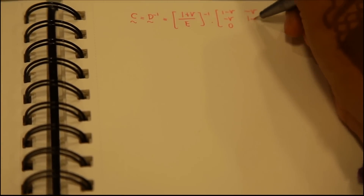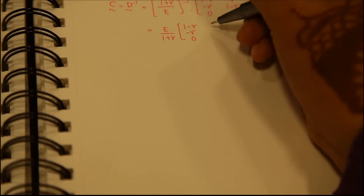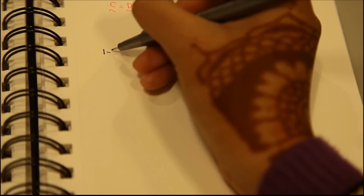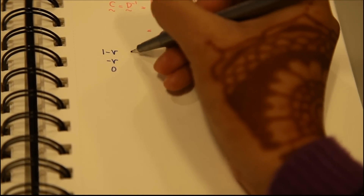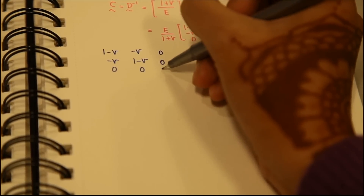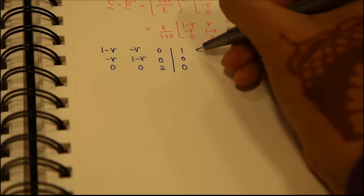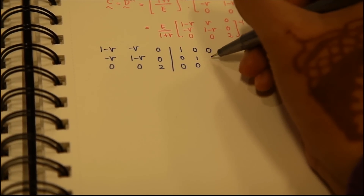The method just described was the mechanical approach. Now we look at the Gauss-Jordan approach, which is a mathematical method. We write two matrices: on the right-hand side the unit matrix, and on the left-hand side the compliance tensor matrix, in order to derive the elasticity tensor matrix.